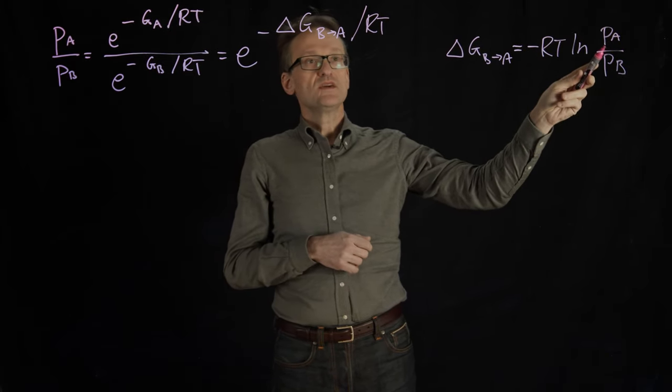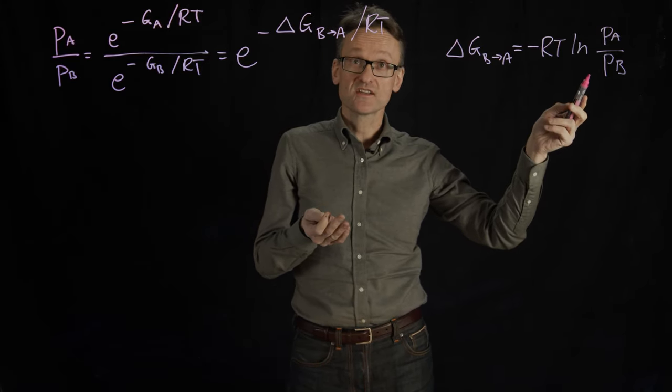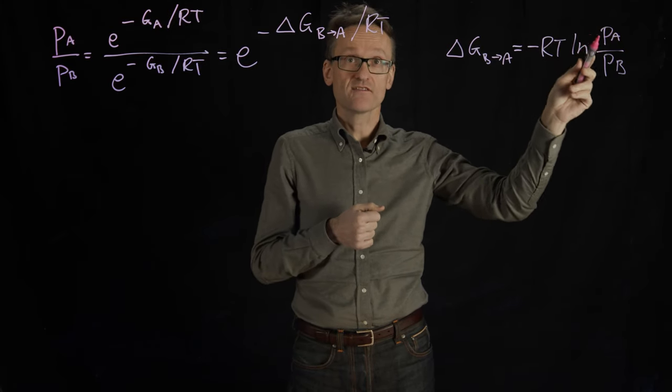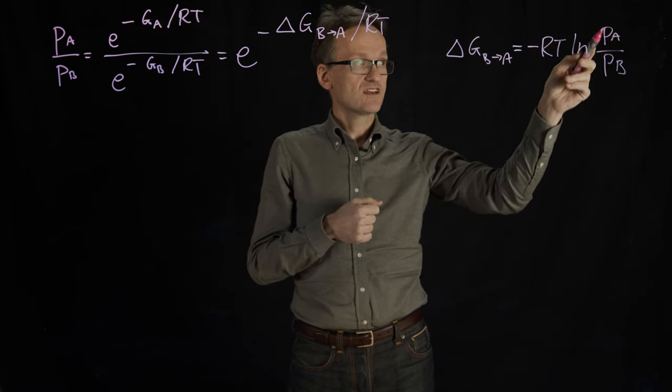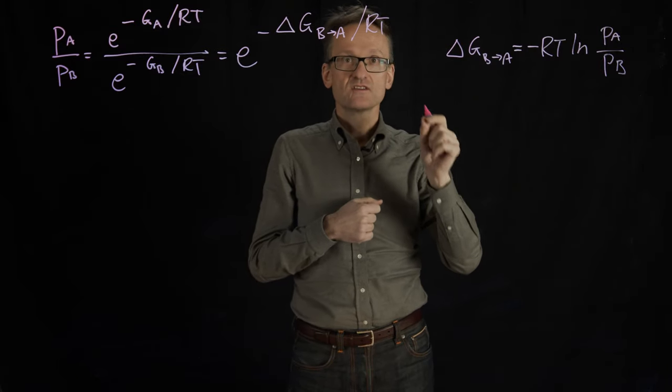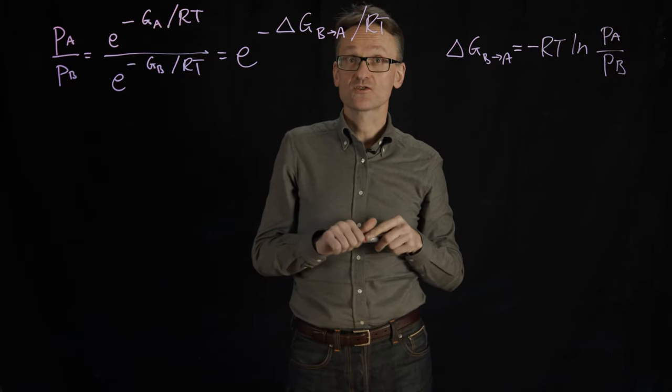The point here is that the PAs and the PBs are the stuff we can get from experiments. This can be concentrations in this case, but it could also be anything you can count. The second you have something you can compare, take the quotient, the logarithm, and then you will get the free energy from it. So this allows us to get delta G where we previously only had concentrations or counts.